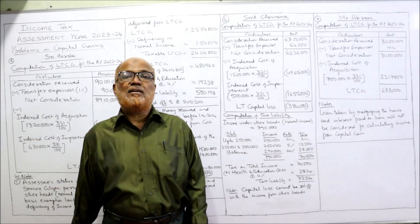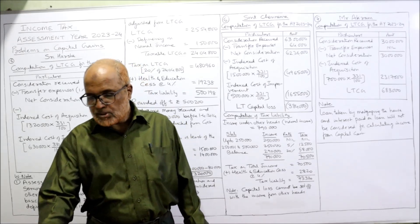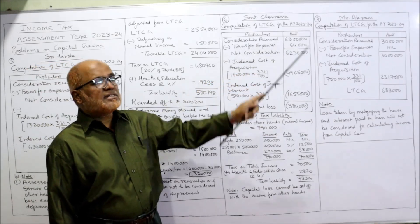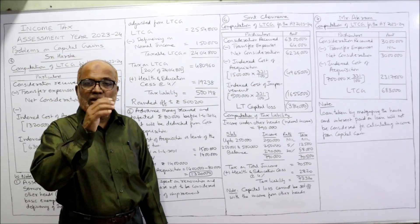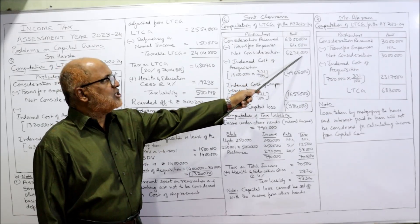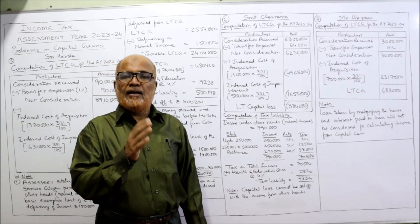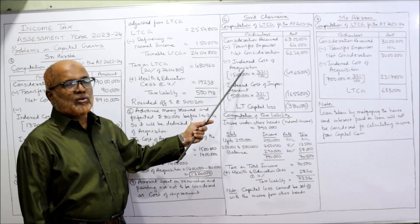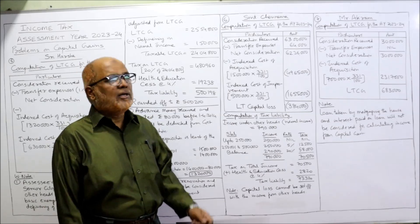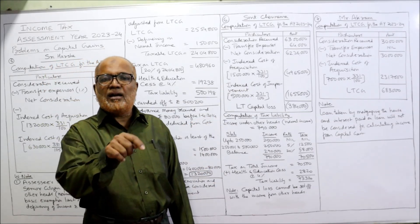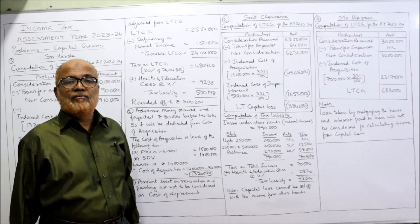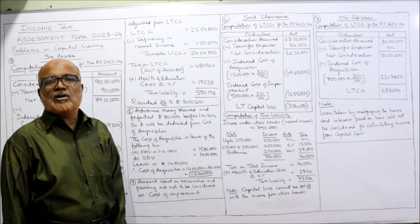Income from other heads is Rs. 7,90,000 — more than Rs. 2,50,000 — so separately we calculate tax on normal income and tax on LTCG. First we calculate LTCG: consideration received is Rs. 63,00,000 — the stamp duty value, not the actual sale proceeds, because stamp duty value is more. Transfer expenses Rs. 64,000; net consideration Rs. 62,36,000. Indexed cost of acquisition: FMV Rs. 15,00,000 is lower than stamp duty value Rs. 16,00,000. So Rs. 15,00,000 into 331 divided by 100 = Rs. 49,65,000.